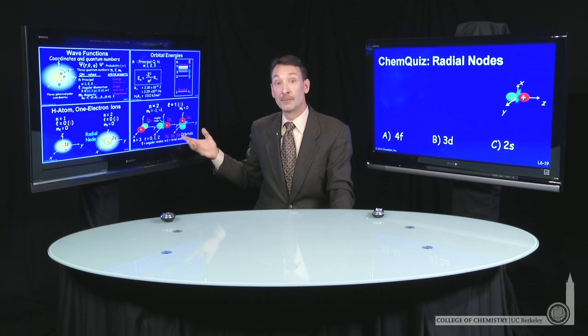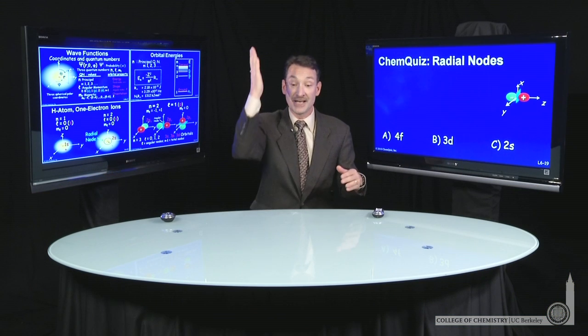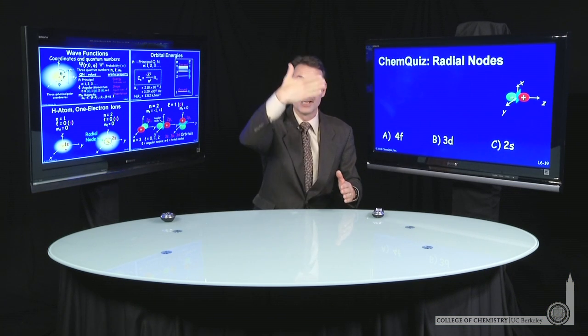n minus 1 gives you the total number of nodes, the angular plus the radial nodes. So the values of n and l combine to tell you what's happening with the nodes. If you understand that there are angular nodes slicing up space, that pretty much tells you about the shape and orientation of the orbital.